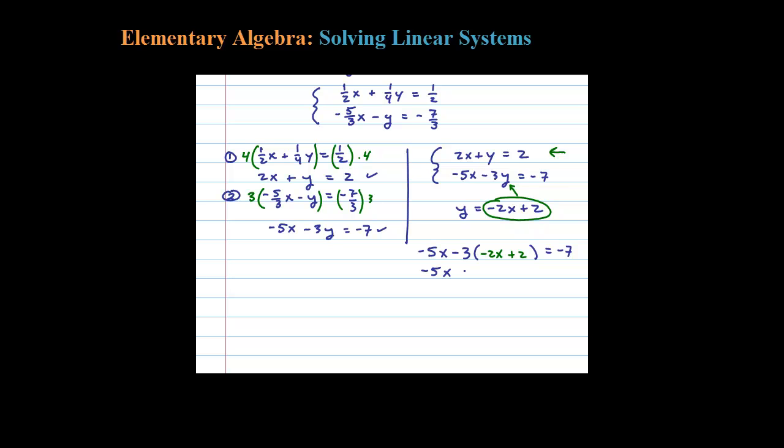So -5X + 6X - 6 = -7. Combining like terms: -5X + 6X is 1X. Then adding 6, we get X = -1.